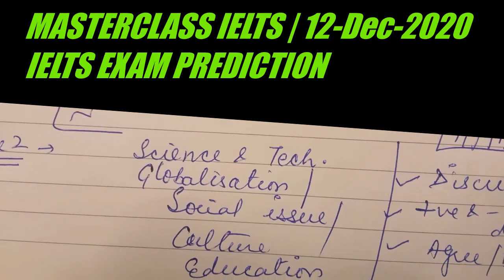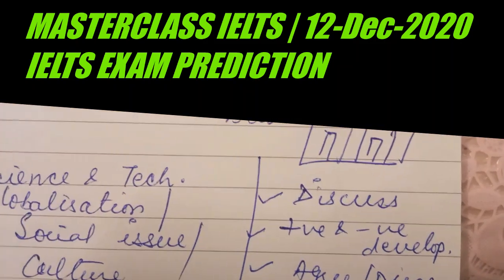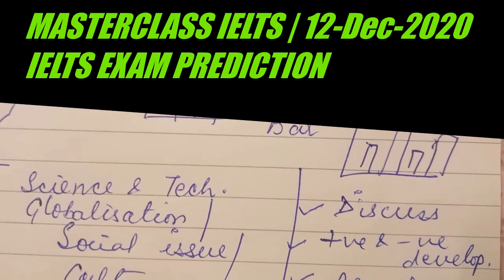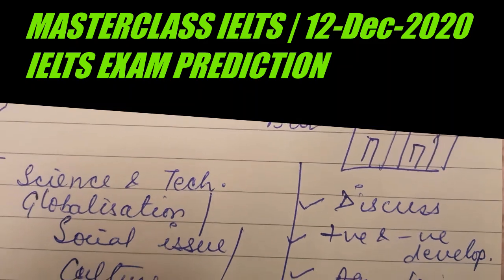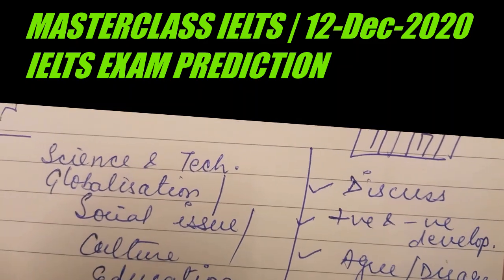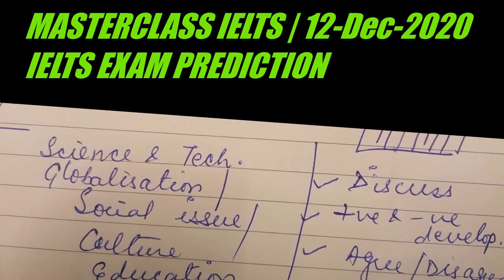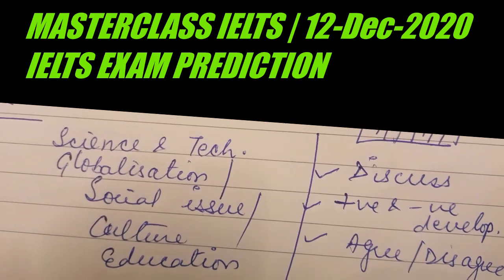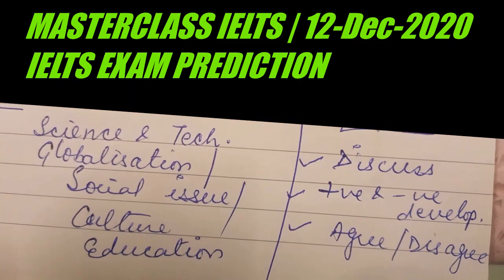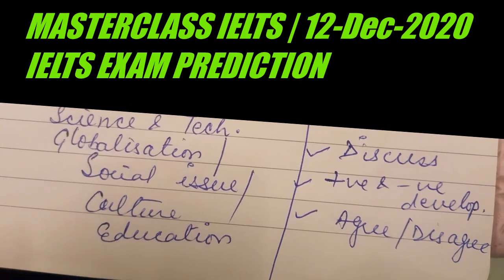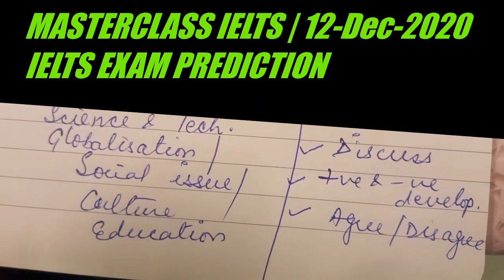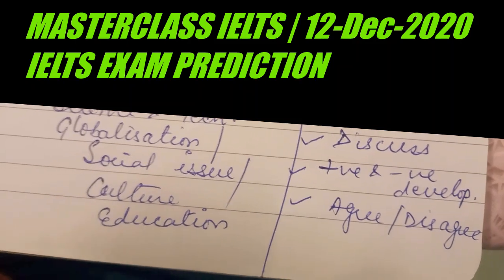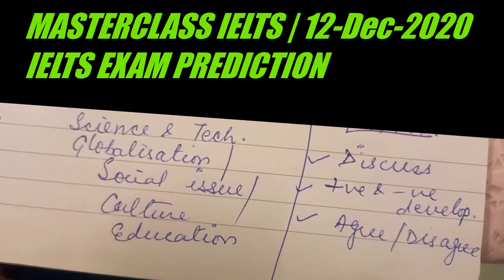Coming to the question types: first, 'discuss both views and give your opinion' — this type of question can come in the exam. The second will be 'positive and negative development' — is it a positive or negative development? You need to think about whether to mention positive, negative, or both. The last one will be 'agree or disagree,' which is again quite tricky because in agree or disagree you can only take one standpoint.